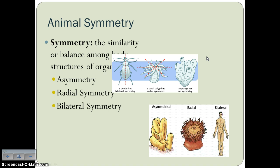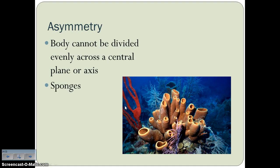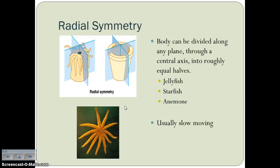Let's talk about animal body plans for a minute. Symmetry is the similarity or balance among body structures of organisms. There are three types: asymmetry (or lack thereof), radial symmetry, and bilateral symmetry. Asymmetry is when the body cannot be divided evenly across a central plane — our go-to example is sponges, phylum Porifera. Radial symmetry is when the body can be divided along any plane through a central axis into roughly equal halves — examples include jellyfish, starfish, and anemones, which are usually very slow-moving or sessile.